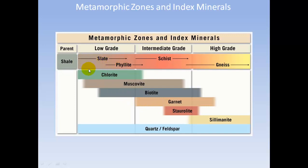In the slate zone, you find a lot of chlorite, and you can also start getting some muscovite. At slightly higher grades, there is very low chlorite with more muscovite and biotite, possibly garnet or staurolite. In high-grade gneisses, index minerals tend to be sillimanite, possibly with garnet, staurolite, and biotite.